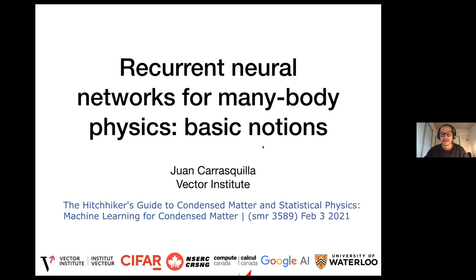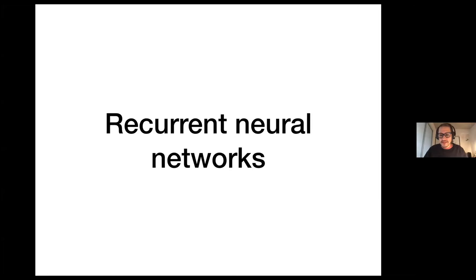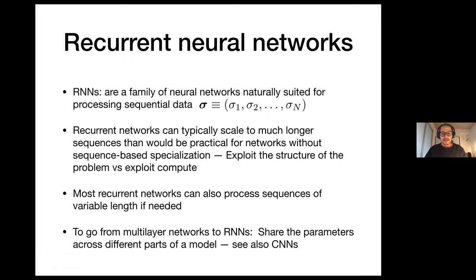I want to tell you about recurrent networks and how we've been using them for many-body physics. The first part is going to be about basic notions. So what are recurrent neural networks and why they're useful and why we think they're a powerful tool to study many-body physics? They're a family of neural networks that are naturally suited for processing sequential data.